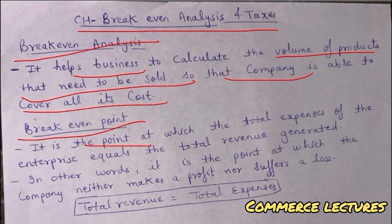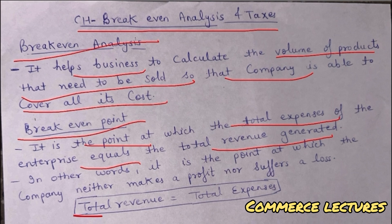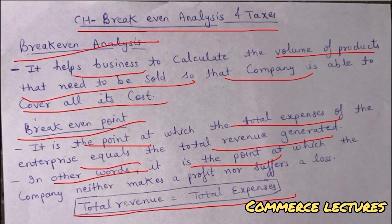Break-Even Point वह point है जहाँ हमारी company के जितने भी खर्चे हैं वो सारे बराबर हो जाते हैं जितनी हमारी कमाई हुई है — जैसे एक लाख रुपये खर्च किया है तो एक लाख रुपये की कमाई हो गई है, दोनों बराबर हैं। So at Break-Even Point the company has neither profit nor loss, because the revenue is equal to the cost.